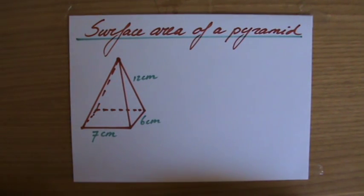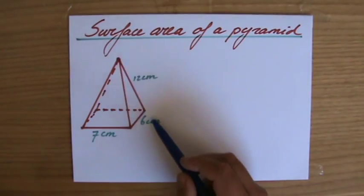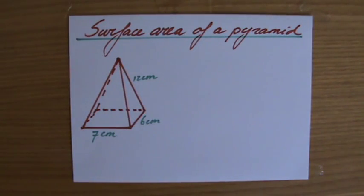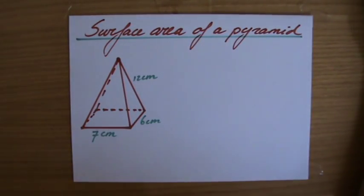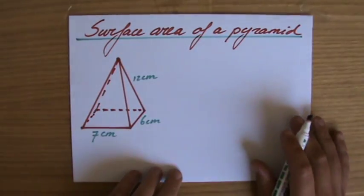So a rectangular-based pyramid. And it is 7cm x 6cm. And the slant height, and that is important in a minute, the slant height is 12cm. And the question now is, what is the surface area? Now especially in the beginning, it is a very wise idea to sketch a net of the situation.